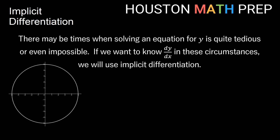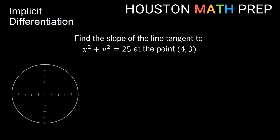Sometimes when we're solving an equation for y, it will be tedious or even impossible to do by hand. And if we want to know dy/dx or y prime in these circumstances, implicit differentiation is a really nice tool to use. Think about a circle with radius five. If I want to find the slope of the line tangent to my circle at the point (4, 3), the equation for my circle is x squared plus y squared equals 25, and I want to find the slope of the tangent line — in other words, I need to find the derivative and then plug in the values.